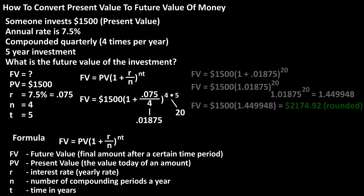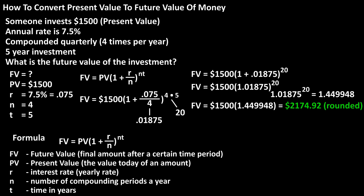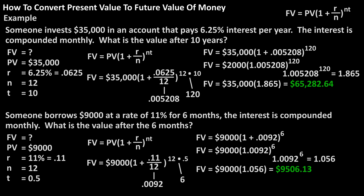I've done all the steps and calculations on the screen, and we get future value equals $2,174.92 rounded off. And here are a couple more examples of converting a present value to a future value.